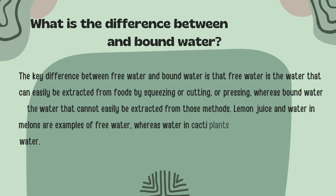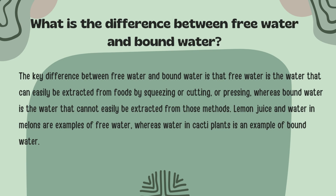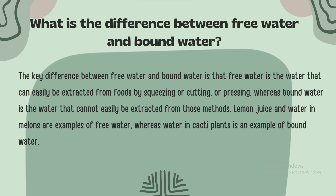The key difference between free water and bound water is that free water is the water that can easily be extracted from foods by squeezing, cutting, or pressing, whereas bound water is the water that cannot easily be extracted using those methods. Lemon juice and water in lemons are examples of free water, whereas water in cacti plants is an example of bound water.